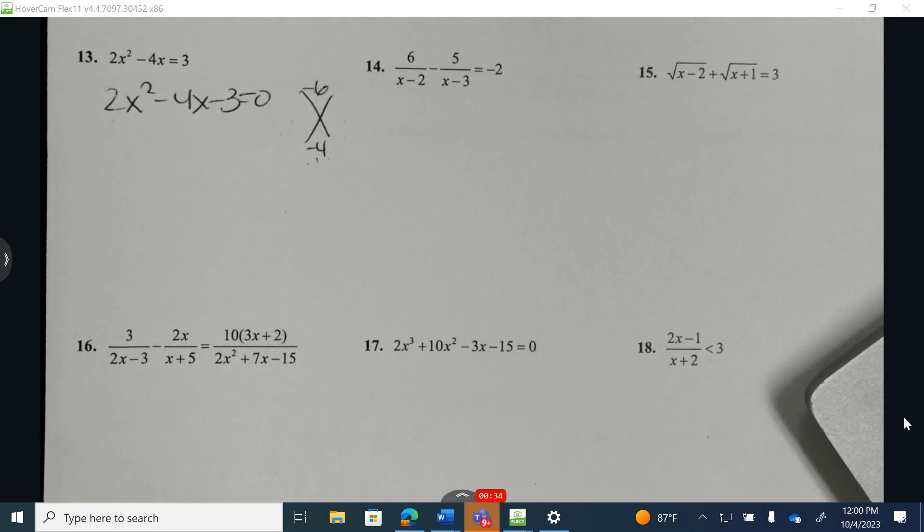So I'm going to identify the A, the B, and the C. My A, my B, and my C are going to be what is in front of the X squared, the X, and then the constant, which is negative 3.